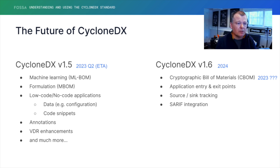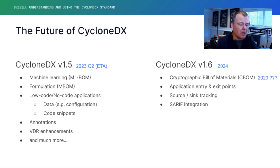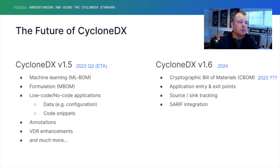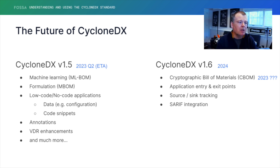For 1.6, we're also planning a cryptographic bill of materials. This is work that IBM has done — they basically forked CycloneDX in a backward-compatible way and made a cryptographic bill of materials that describes all the different algorithms and other things useful for identifying risk in a post-quantum world. That might actually happen this year, but certainly by next year. We're also looking at attack surface mapping — entry and exit points of the application — and a bunch of other things for 1.6.